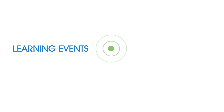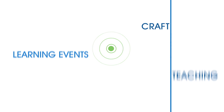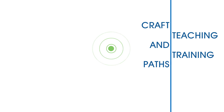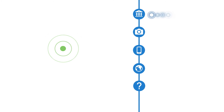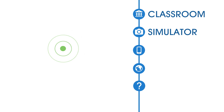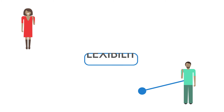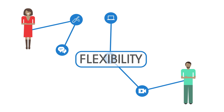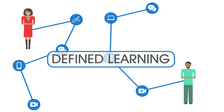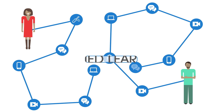Because the Tin Can API thinks in terms of learning events, you now have the freedom to track learning whenever and wherever it happens. This allows you to craft teaching and training paths using whatever delivery method is best for the learner. An LRS can track learning that takes place in a classroom, in a simulator, on a tablet, in space — wherever a user needs to go, Tin Can is able to track it. You can give users flexibility to learn according to their needs, or define a learning path for them so that they receive meaningful and effective instruction, unconstrained by the limitations of your tracking system.